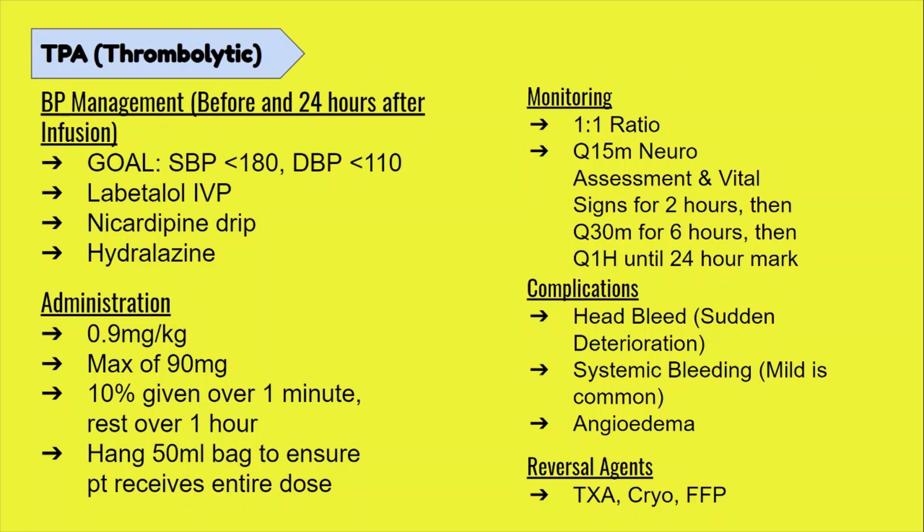Before TPA can be administered, the patient's blood pressure must be under 180 over 110. If it's not, you cannot start TPA. This is why it's very important to have a transport monitor hooked up to your patient prior to even getting to CT, so that you are already thinking ahead if your vital signs are out of whack. A common medication given as an IV push is labetalol, while a common blood pressure drip medication used is nicardipine, otherwise known as Cardene.